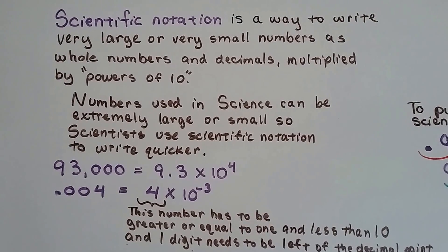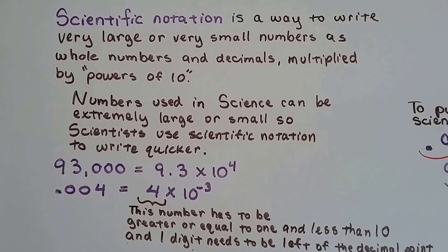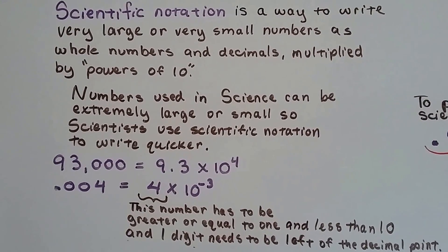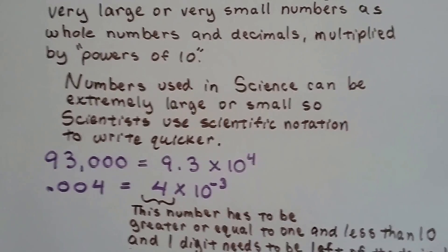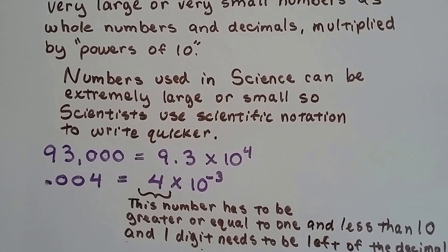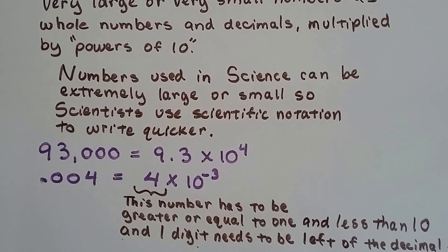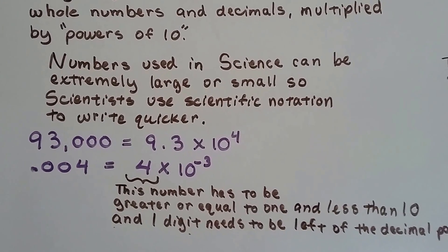Numbers used in science can be extremely large or small, so scientists use scientific notation to write quicker. So 93,000 would be written as 9.3 times 10 to the 4th, and .004 could be written as 4 times 10 to the negative 3rd.